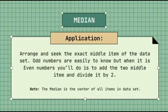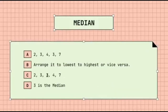Median application: arrange and seek the exact middle item of the dataset. For odd counts it's straightforward; for even counts, add the 2 middle items and divide by 2. Given: 2, 3, 4, 3, 7 — arrange from lowest to highest: 2, 3, 3, 4, 7. So our median is 3.